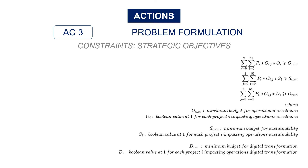Then you have the strategic objective constraints. For each strategic objective, the total allocated budget should be higher than the minimum asked by management, which is basically 15% of the total budget.